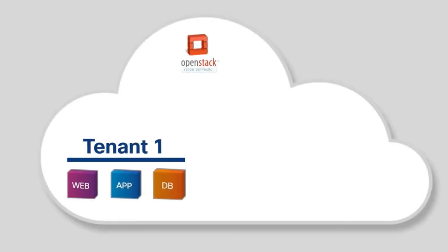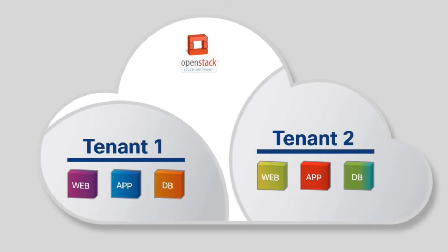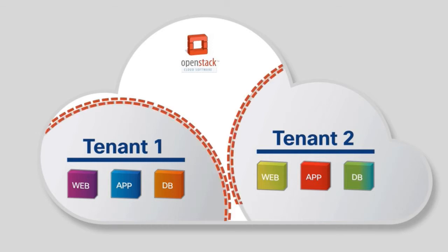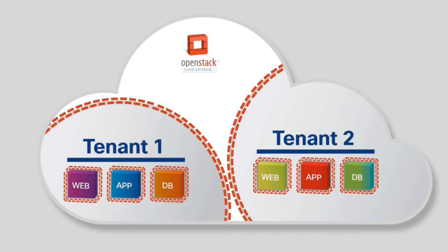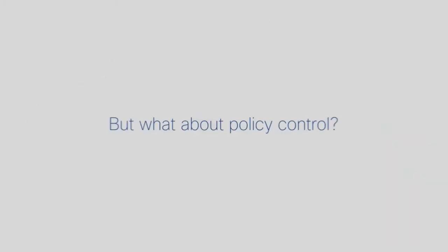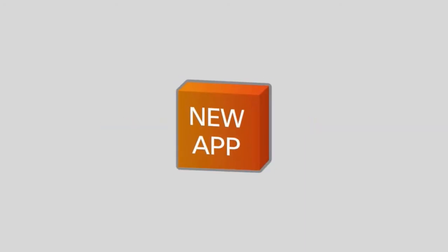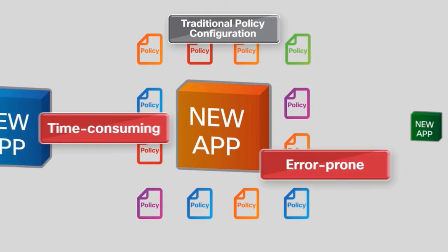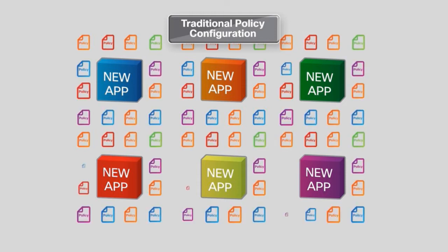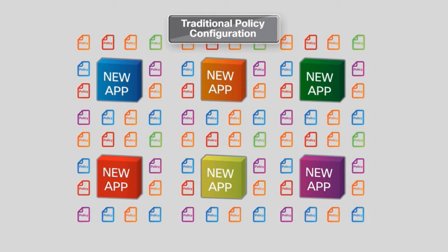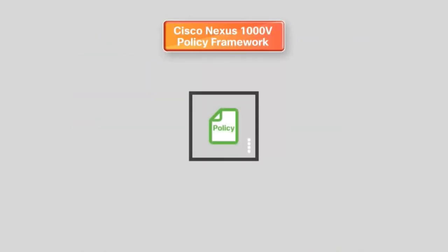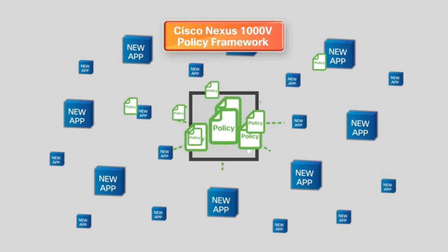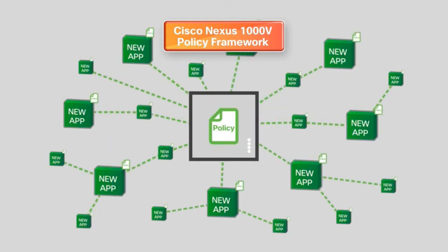On the security front, Cisco Nexus 1000V provides stateful firewall functionality within your infrastructure to isolate tenants, and enables isolation of virtual machines with policy-based VM or network attributes. For policy control, you could rely on configuring policies for each application, but that's time-consuming and error-prone. If a policy changes, you'd have to reconfigure potentially dozens of tenants. Or, you could take advantage of Cisco Nexus 1000V's policy framework, enabling centralized enterprise-compliant policy management, pre-provisioning of policies on a network-wide basis, and simplified policy additions and modifications.